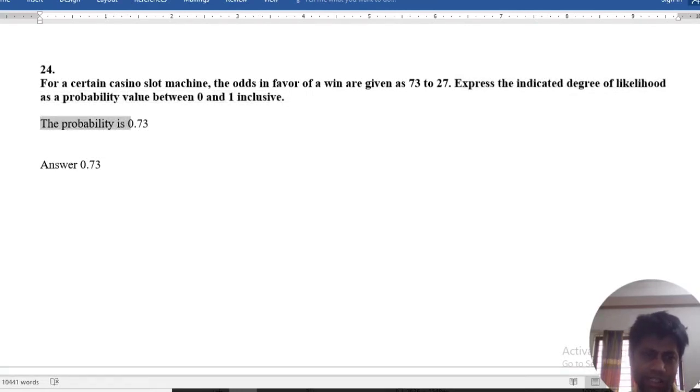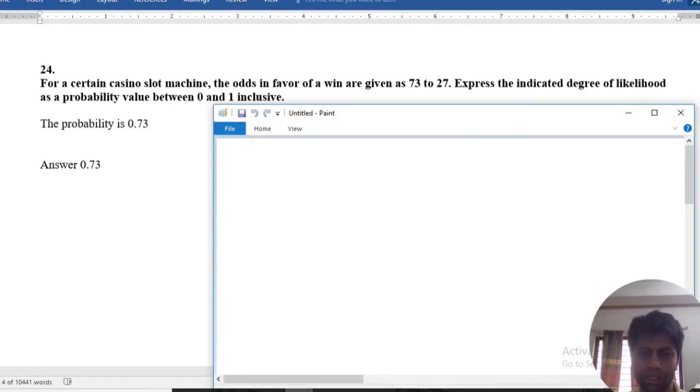The answer is 0.73. How is 73 calculated? Let's see. 73 plus 27 is equal to 100, okay?